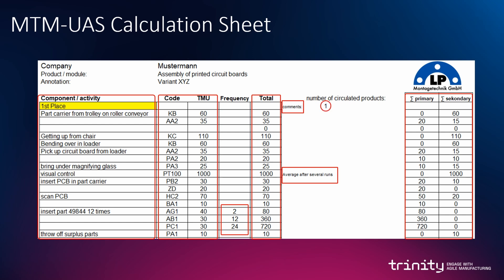Finally, you can enter the number of circulated products, in case you have a part carrier with several fixtures, such as in a one-piece flow assembly system.